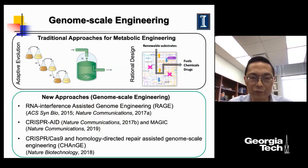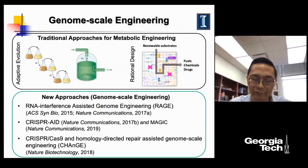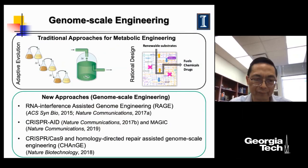The traditional approaches for metabolic engineering are either based on adaptive evolution, which is essentially serial culture transfer, or rational design — applying systems biology tools to identify rate-limiting steps and then perform genetic manipulations. This approach works pretty well but is very time consuming. In many cases, we also cannot identify non-intuitive gene targets. That's why in the past 10 years, my group developed genome-scale engineering tools coupled with high-throughput screening and automation to identify many novel gene targets.